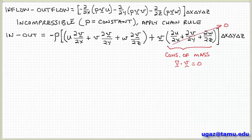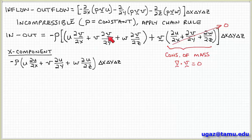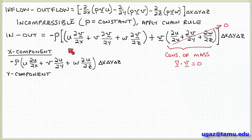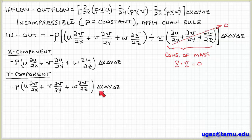We can break this up into individual components, since vector quantities are involved in these derivatives. Looking at the x component, we have minus rho times: u times the partial derivative with respect to x of u, plus v times the partial with respect to y of u, plus w times the partial with respect to z of u, times delta x delta y delta z. Similarly, the y component is minus rho times: u times the partial of v with respect to x, plus v times partial of v with respect to y, plus w times the partial of v with respect to z, times delta x delta y delta z.